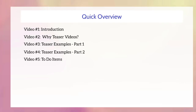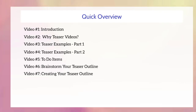Video number five covers the to-do items you need to accomplish before moving on. Video number six covers brainstorming your teaser outline based on what you've learned. Video number seven takes that brainstorm — a bunch of ideas — and organizes them into your teaser outline, which is crucial to have before creating the teaser video. Believe it or not, creating a video is actually very, very easy — it's about 5 to 10% of the whole video creation process. The big part is getting the idea and creating the outline.